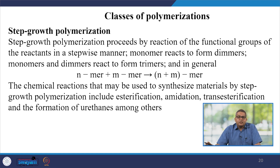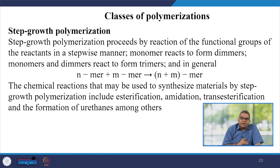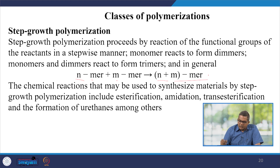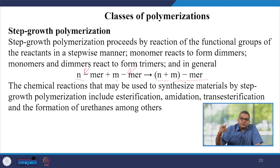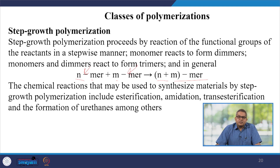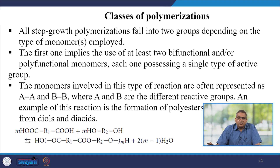Step growth polymerization proceeds by reaction of functional groups of the reactants in a stepwise manner. The monomer reacts to form dimers, dimers react to form trimers, and so on. Chemical reactions that may be used to synthesize material by step growth polymerization include esterification, amidation, transesterification, and formation of urethanes among others. All step growth polymerizations fall into two groups depending on the type of monomers employed.